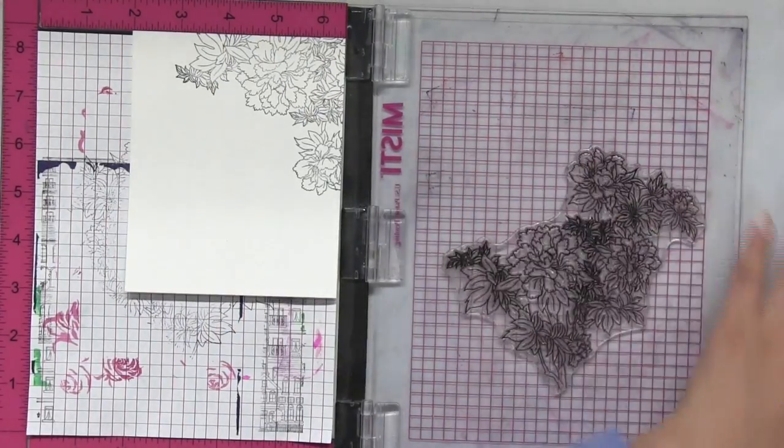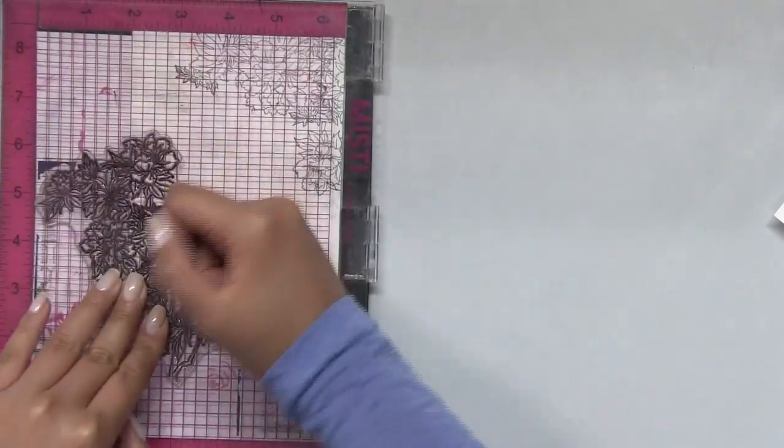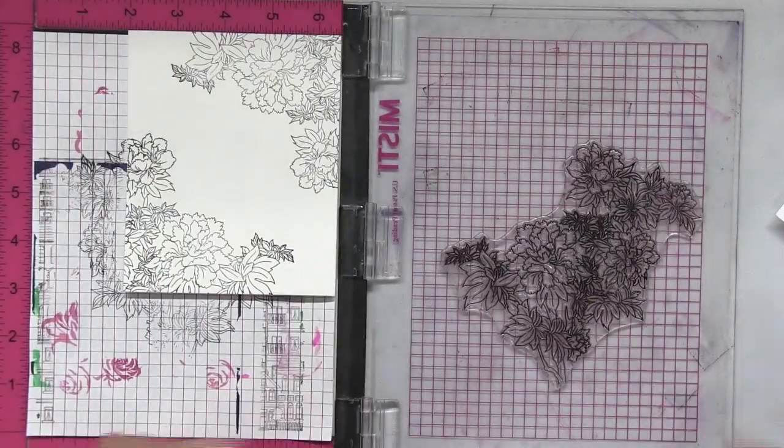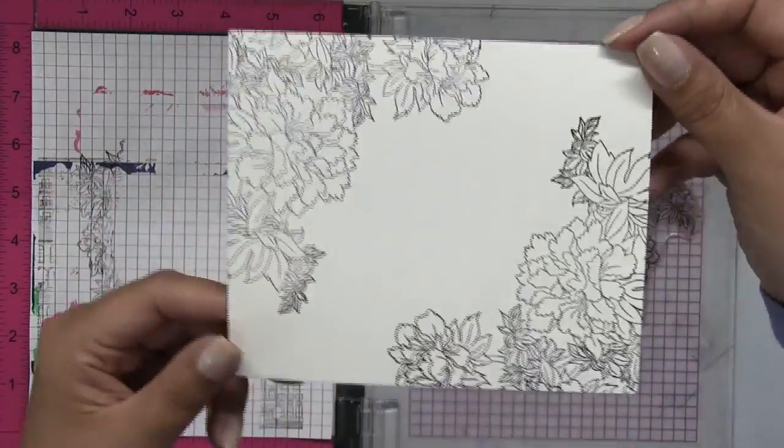I'm using our noir dye black ink which is archival, which means that you can watercolor over this ink and the ink will not smudge or blend or anything. It'll stay nice and crisp and clean.